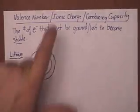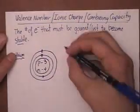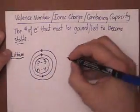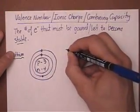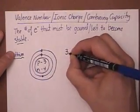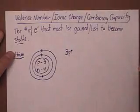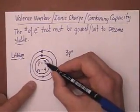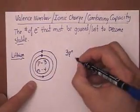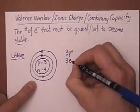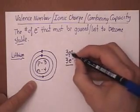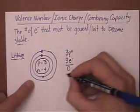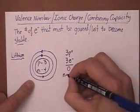I want to prove that this lithium atom is neutral. If I look, I've got three protons. The number of protons equals the number of electrons, so that means I've got three electrons. Three positives and three negatives gives zero — or neutral.